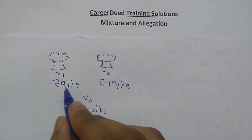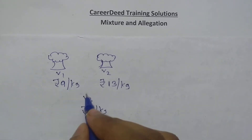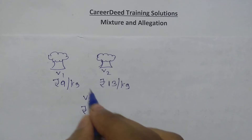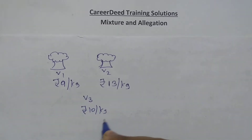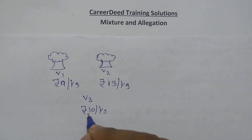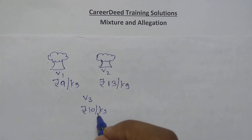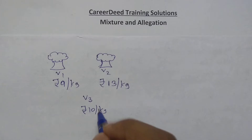So you are taking some kilograms from variety 1 rice and some other kilograms from variety 2 rice, mixing both, and you have to obtain rupees 10 per kg. The question is: in what ratio do you have to mix both to obtain rupees 10 per kg? Here you have to use the allegation rule.